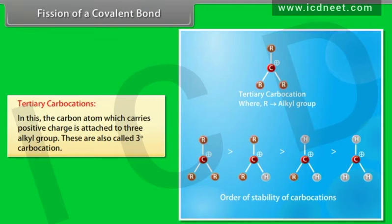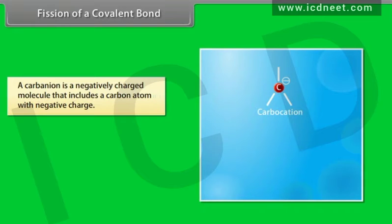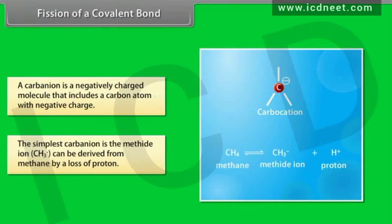The order of stability of carbocations follows the degree classification. A carbanion is a negatively charged molecule that contains a carbon atom with negative charge. The simplest carbanion is the methide ion, which can be derived from methane by a loss of a proton.